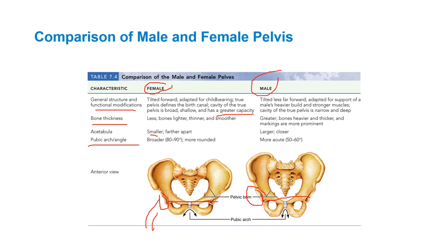The pubic arch angle is a dead giveaway. The female pubic arch is much broader — about 80 to 90 degrees, more rounded. The male is more acute, like 50 to 60 degrees, more narrow. That's another telltale sign of sex differentiation in the pelvis.